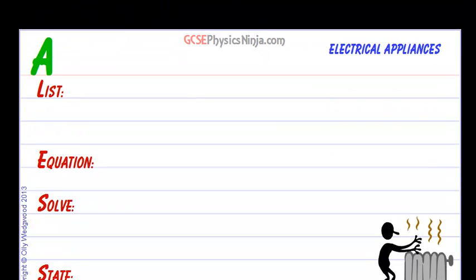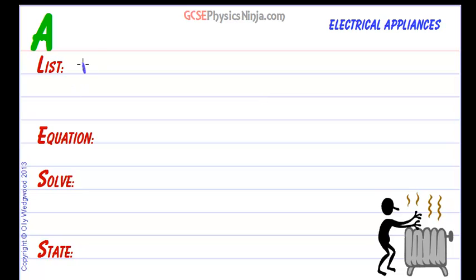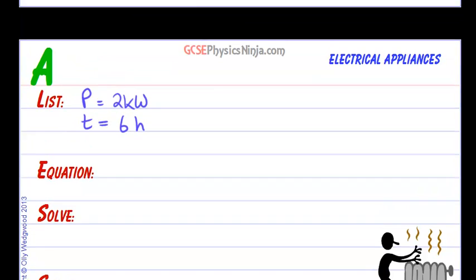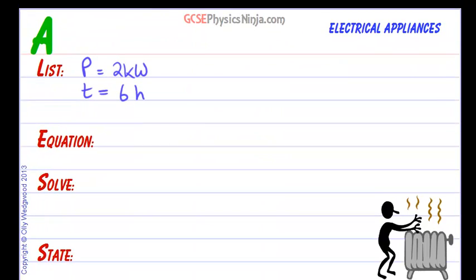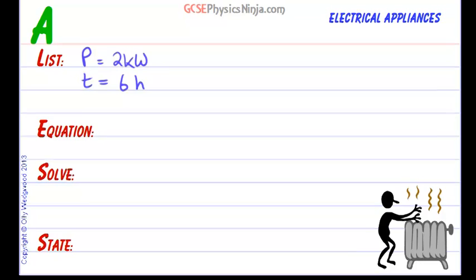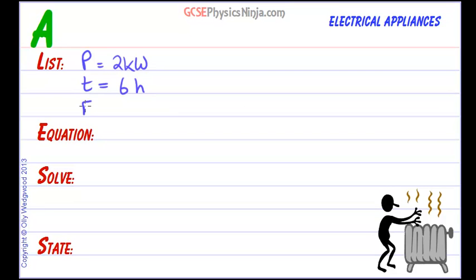So to start with, we know that the power of the fire is 2 kilowatts. We know that the time it's on for is 6 hours. And the question mentions kilowatt hours of energy, so we really should work out the energy that's transformed in this electrical fire, and that's going to be in units of kilowatt hours.